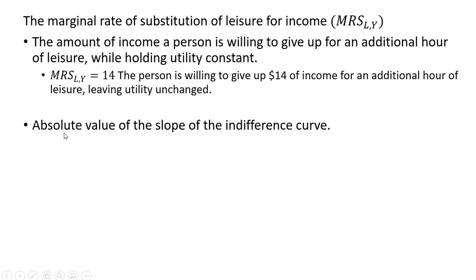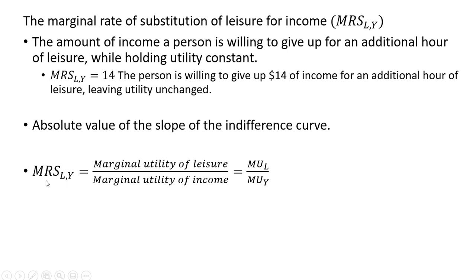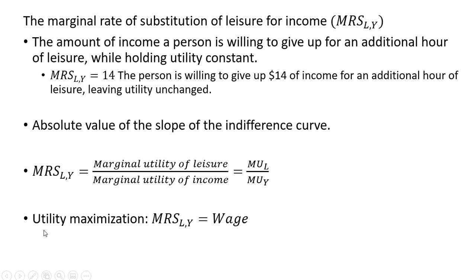The marginal rate of substitution can be thought of as the absolute value of the slope of the indifference curve. We can show that the marginal rate of substitution equals the marginal utility of leisure, MU subscript l, divided by the marginal utility of income, MU subscript y. Utility maximization requires that the marginal rate of substitution equals the wage.